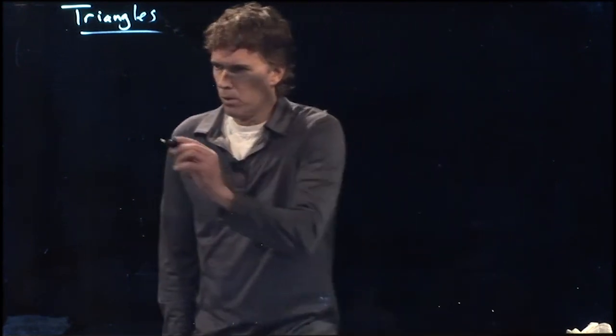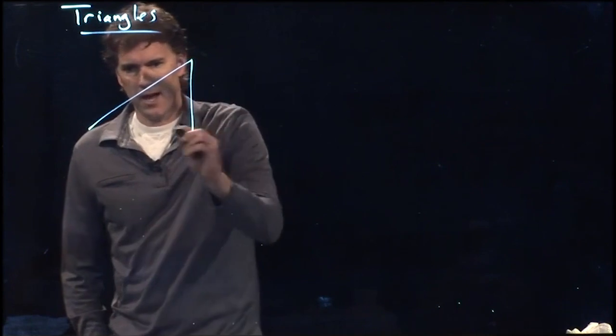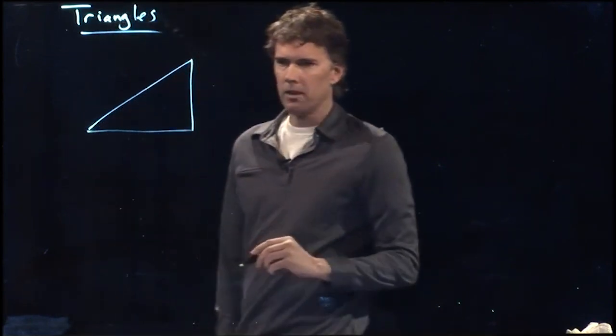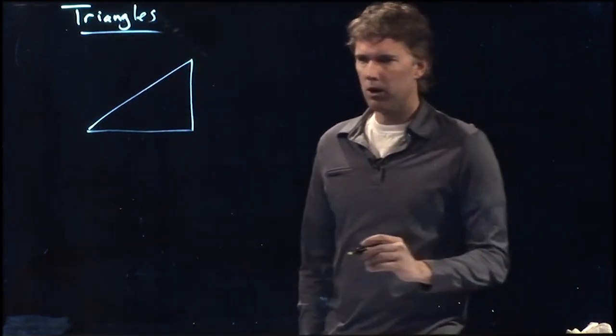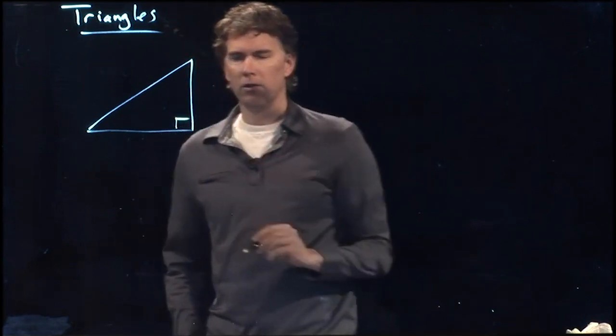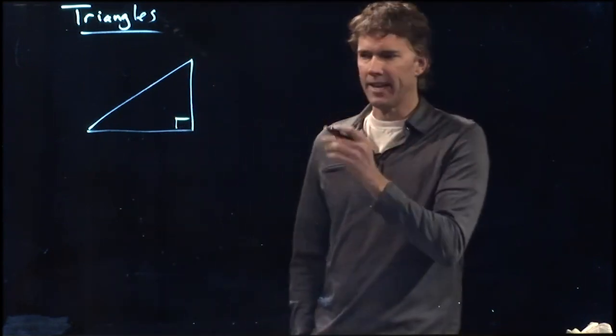Okay, so what does a triangle look like? Triangle looks like that. Okay, that is a special kind of triangle called a right triangle. So we put that symbol right there, which means 90 degrees.